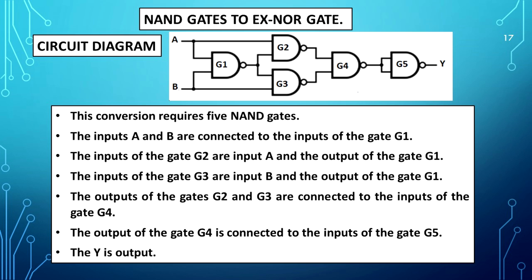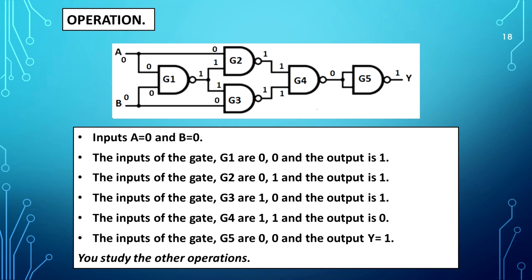NAND gates to XNOR gate circuit diagram is shown. This conversion requires five NAND gates. Inputs A and B are connected to the inputs of G1. The inputs of G2 are input A and the output of G1. The inputs of G3 are input B and the output of G1. The outputs of G2 and G3 are connected to the inputs of G4. The output of G4 is connected to the inputs of G5. The output is Y. Operation: When A=0 and B=0, G1 output is 1, G2 output is 1, G3 output is 1, G4 output is 0, and G5 inputs 0,0 give output Y equal to 1.